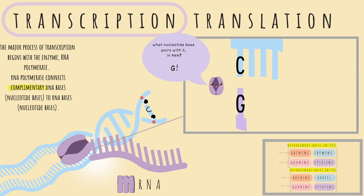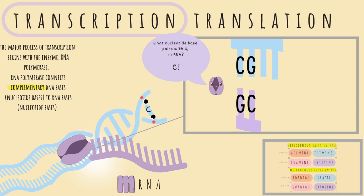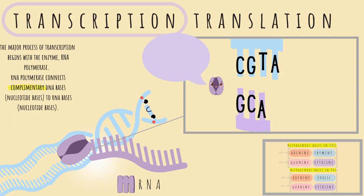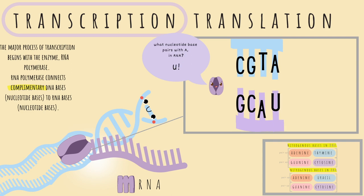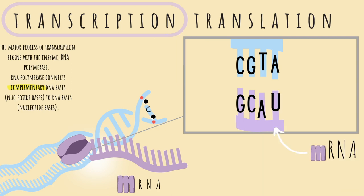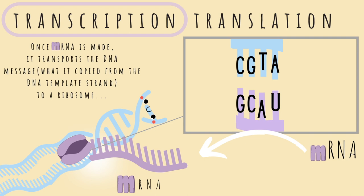Next on the DNA template strand we have G for guanine — cytosine pairs with guanine in RNA. Next we have thymine — adenine pairs with thymine in RNA. Lastly, we have adenine on the DNA template strand — uracil pairs with adenine in RNA. This is how RNA polymerase enzyme makes mRNA out of DNA. Once mRNA is made, it transports the DNA message — that nucleotide sequence coded from the template strand — to the ribosomes.